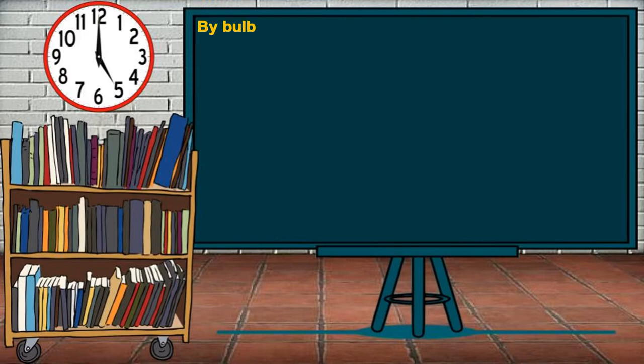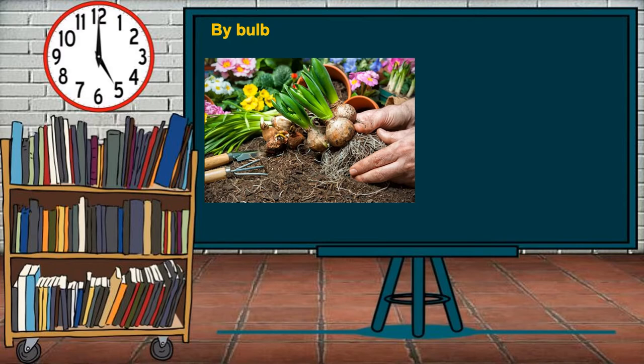Another natural method is by bulb — a short underground stem with thick fleshy leaves. In this method, a new plant develops from the bulb. The fleshy leaves of the bulb contain stored food which supplies food for the growing bulb. Example is onions.